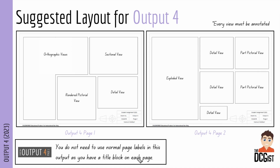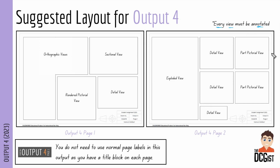Remember, you don't need to use your normal page labels in Output 4 because you have a title block — it's the only output where you won't use those labels, since all the information is already in the title block and these are working drawings. Also remember that every view must be annotated. For your orthographic views, label the elevation, plan, and end view and include dimensions. For all other views, make sure you've annotated them answering the three questions discussed earlier in this video.